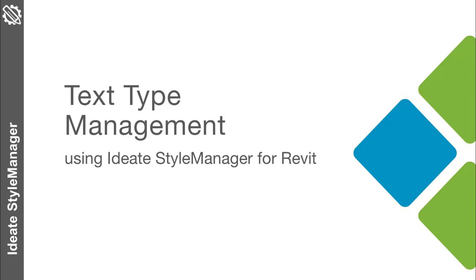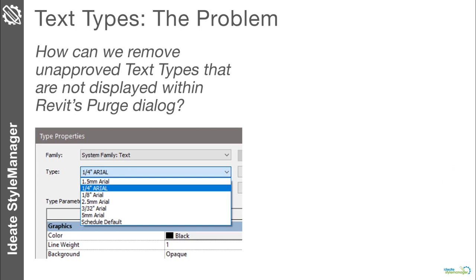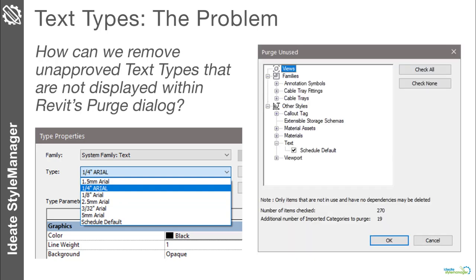In this video we will show how Ideate Style Manager addresses the challenges related to managing text types within Revit models, templates, and family files. The common problem with text types is that unapproved text types make their way into the projects or templates and often cannot be purged because they are in use somewhere. These non-standard text types impact the quality of your deliverables and could require a republishing effort.